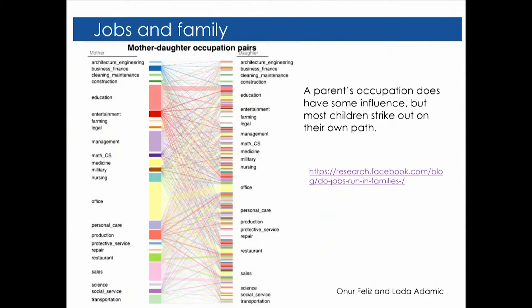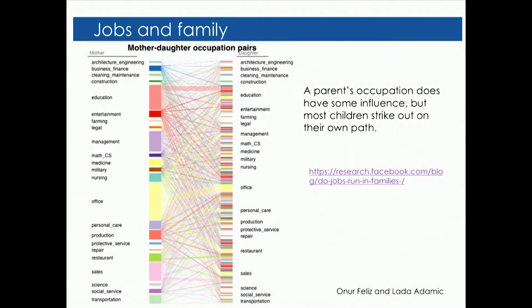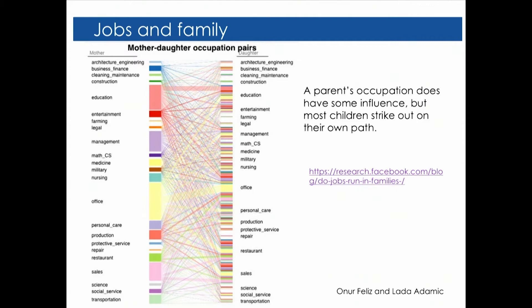Many people on Facebook also have their parents on Facebook, and if both the individual and their parent happen to have filled out their occupation in their profile, we can actually see whether what your parent did or does has influence on what you do. If your parent is a lawyer, you're probably several times more likely to be a lawyer than a random person. But most people are striking out on their own career paths — so you can keep that in mind as you decide on your own career trajectory.